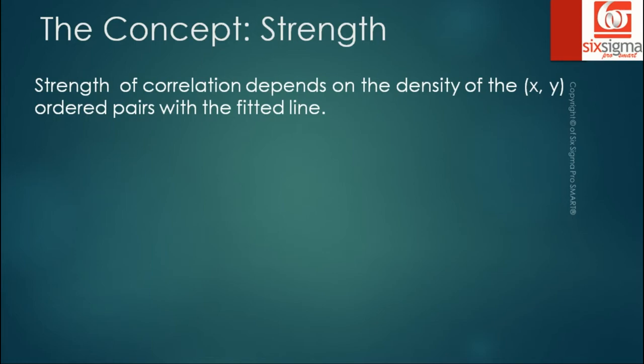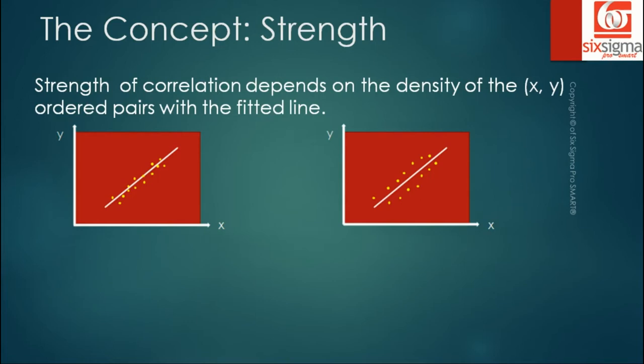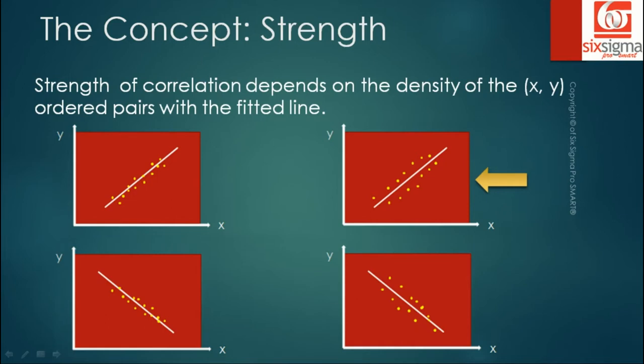The strength of correlation depends on the density of the x-y ordered pairs with the fitted line. The picture on the left has these points somewhat closely bound to the fitted line, whereas the picture on the right shows that these points are somewhat loosely bound compared to the first picture. Likewise, for a negative correlation, the picture on the left has points closely bound to the fitted line, whereas the points on the right are not as closely bound. So looking at the chart itself, in some cases you'll be able to comment on the strength of correlation.